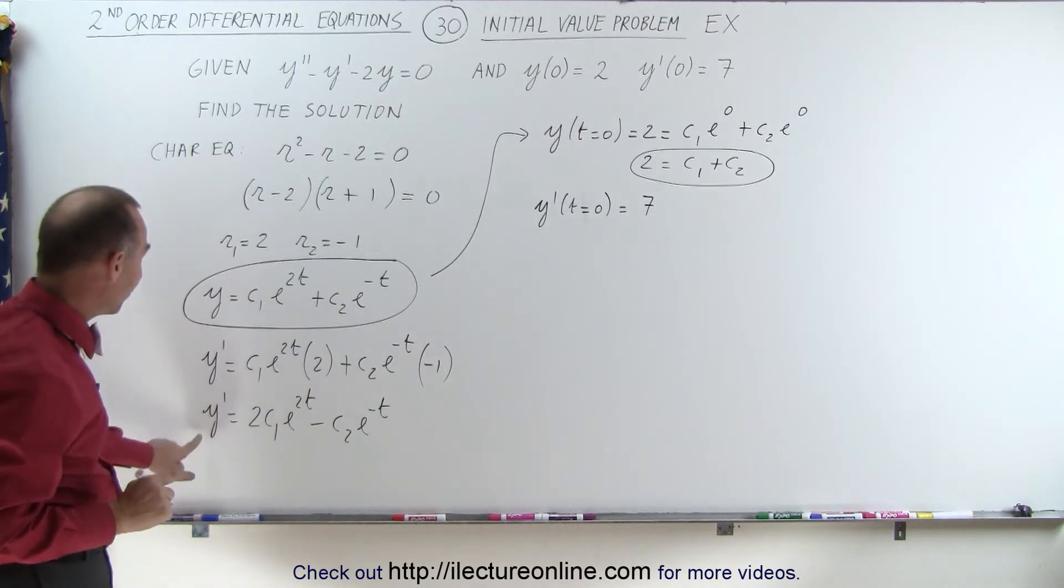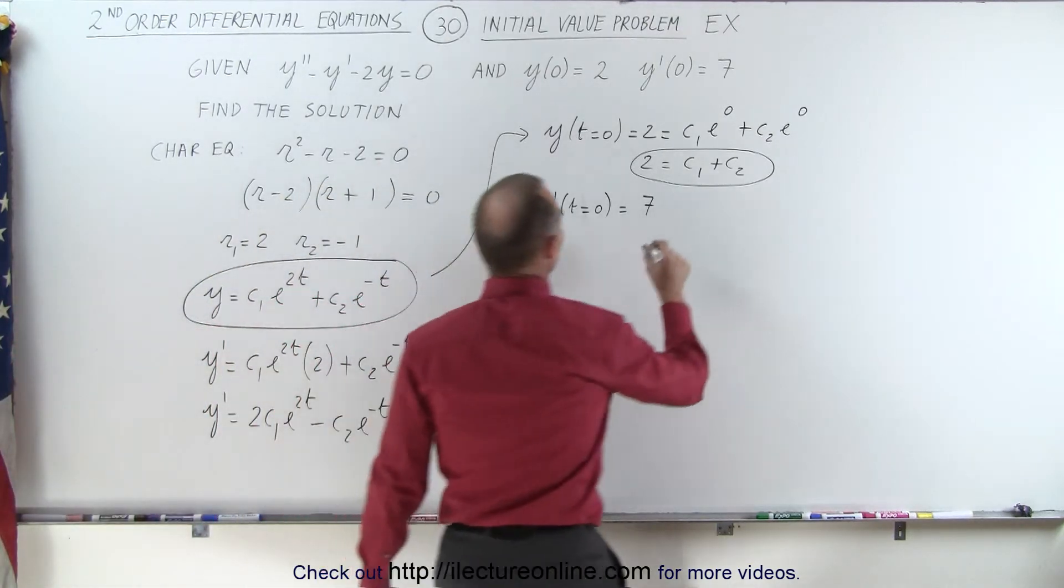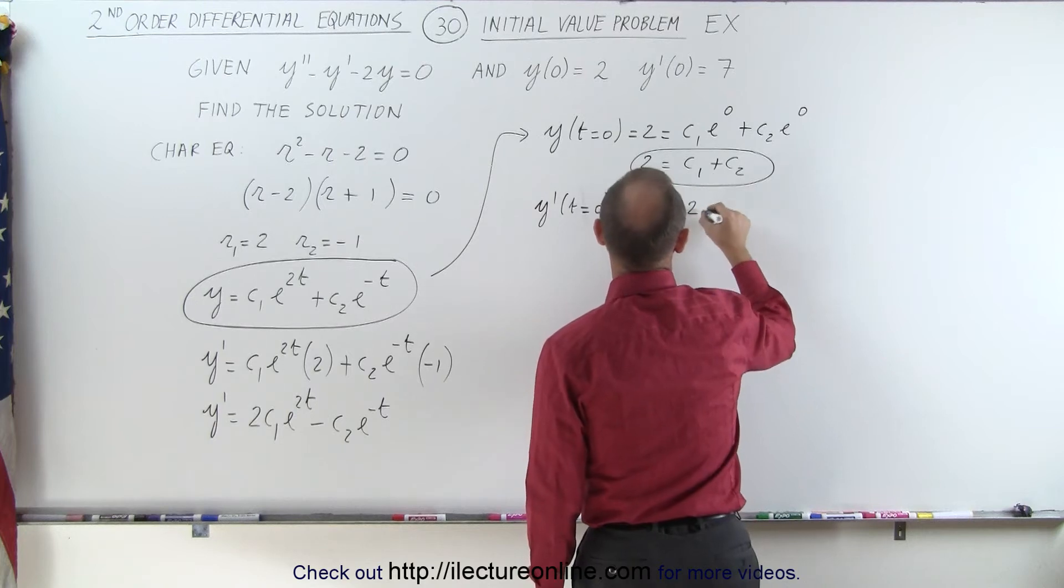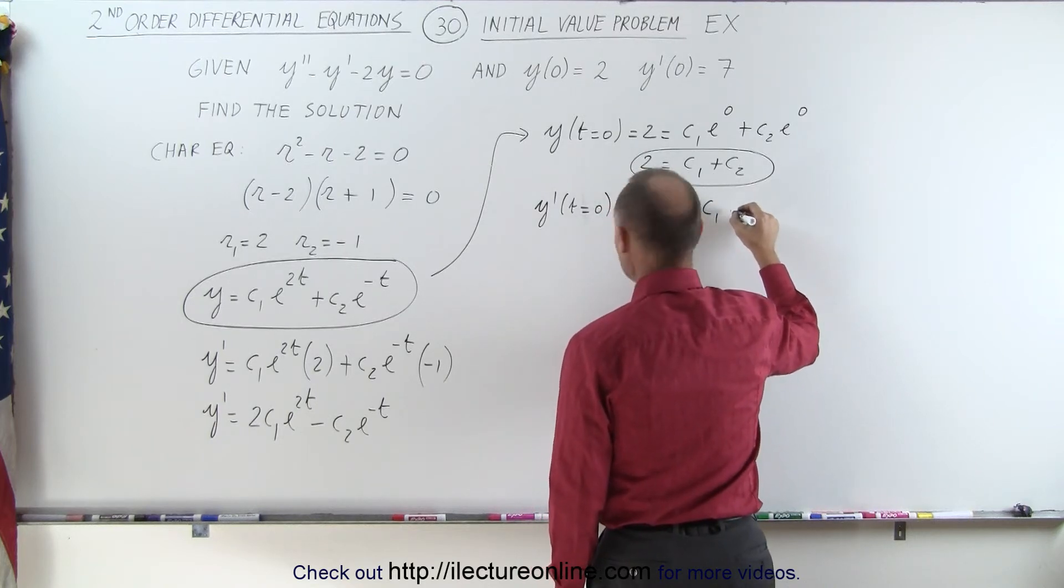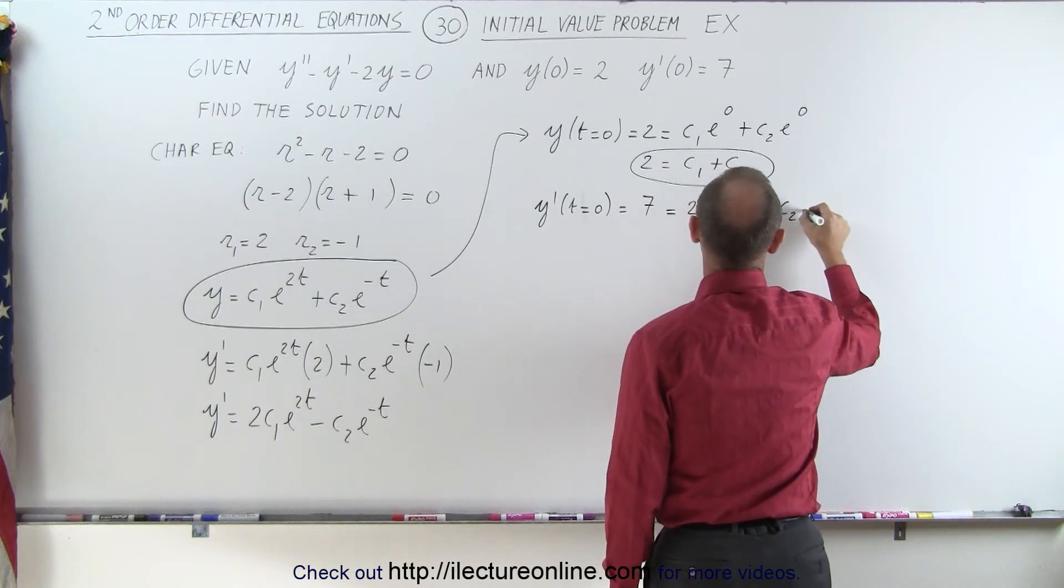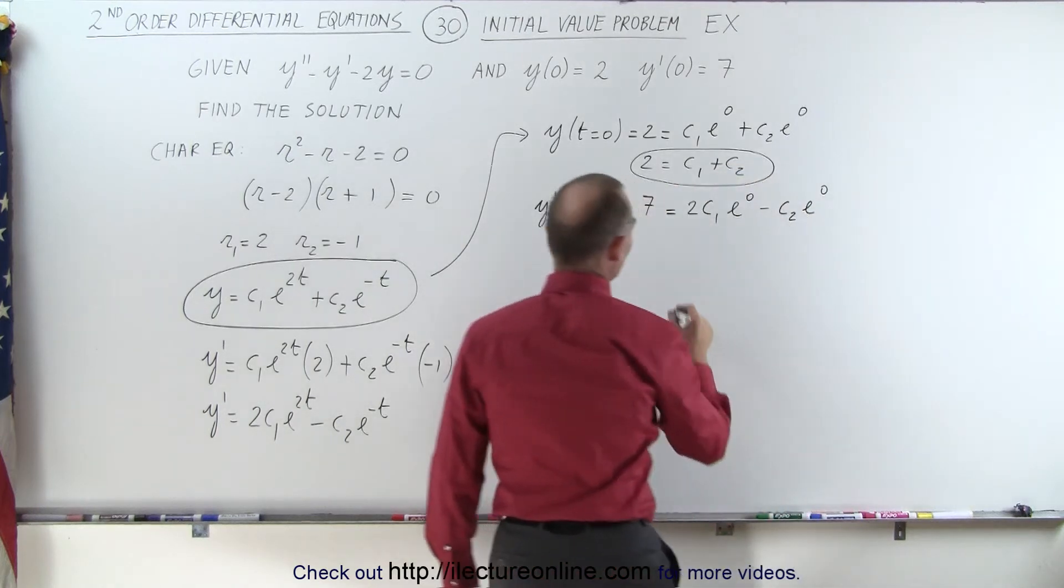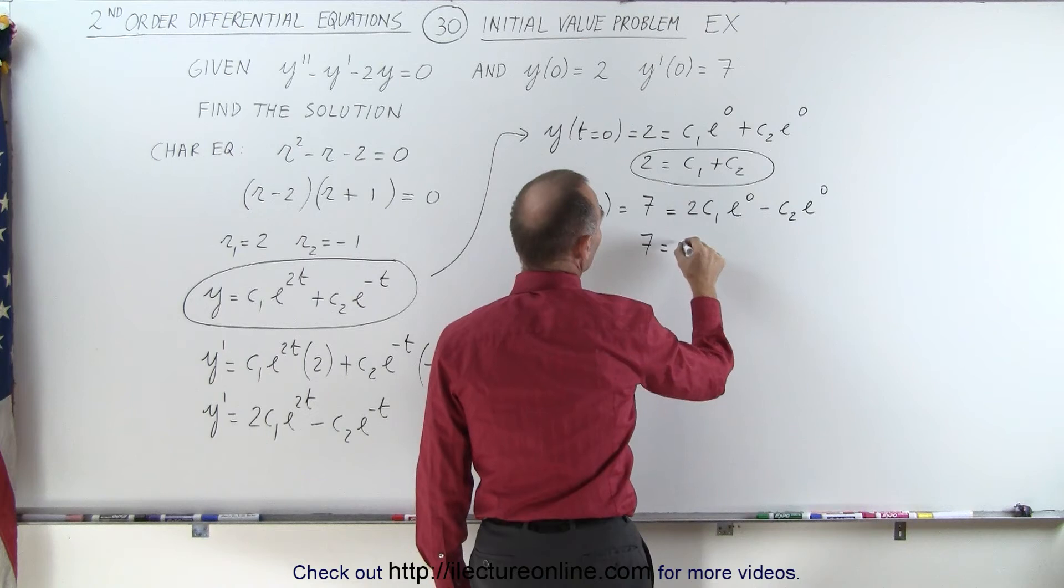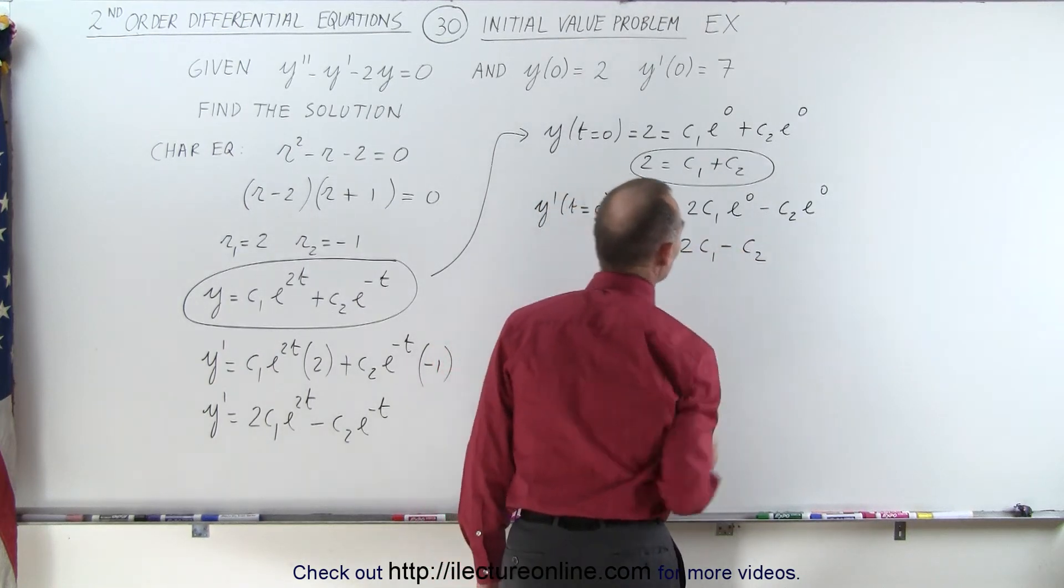So now, plug in a t equals zero value for this. What do we get? This is equal to 2 c1 e to the zero power minus c2 e to the zero power. In other words, 7 is equal to 2 c1 minus c2.